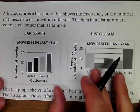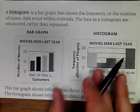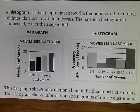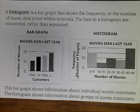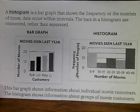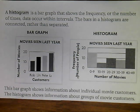The next type of graph we're making today is a histogram. A histogram is a special kind of bar graph that shows the frequency — the number of times data occur — within intervals. The bars in a histogram are connected rather than separated, which is different from standard bar graphs. Bar graphs show information about individual categories, whereas histograms group the categories together in intervals.